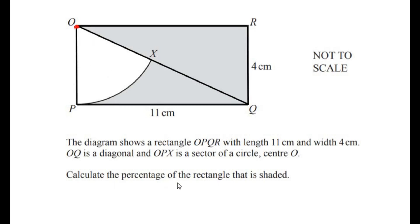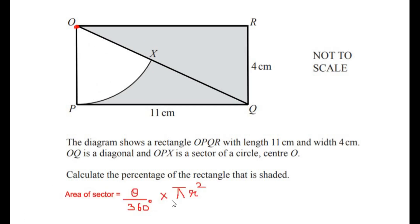We need to calculate the percentage of the rectangle that is shaded. We can see that some part of the rectangle is shaded and some part is unshaded, and the unshaded area is the area of the sector. Let us find the area of the sector using the formula θ/360° × πr², where θ is the angle of the sector and r is the radius of the circle.